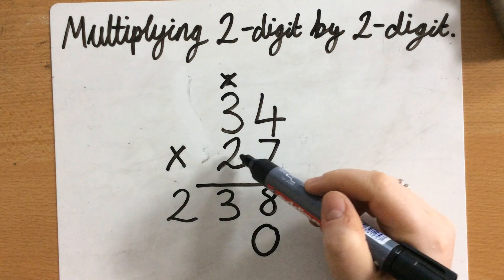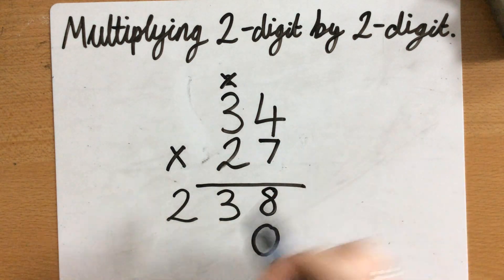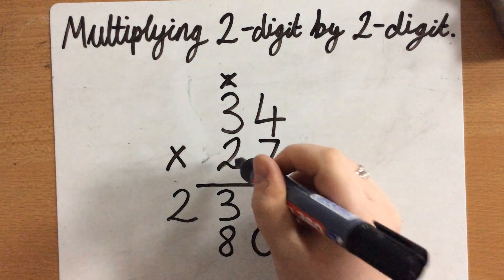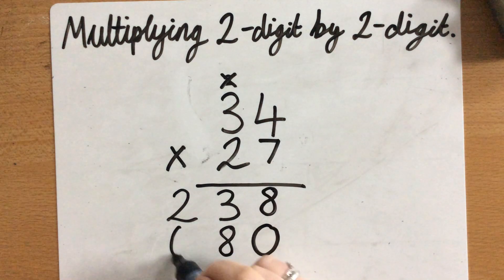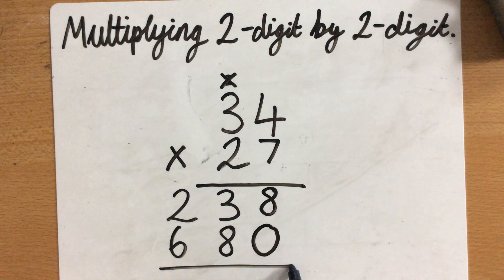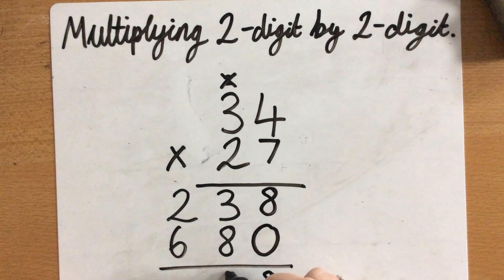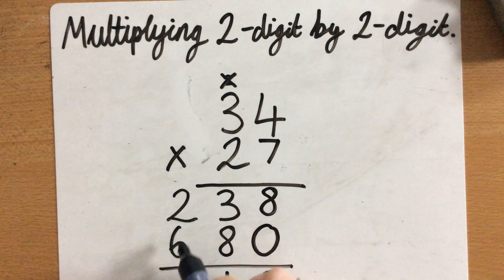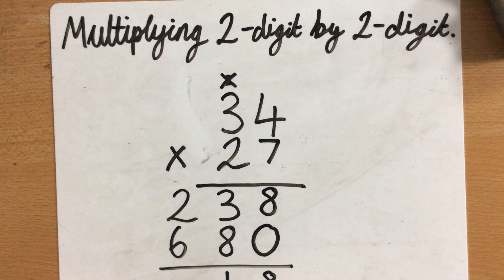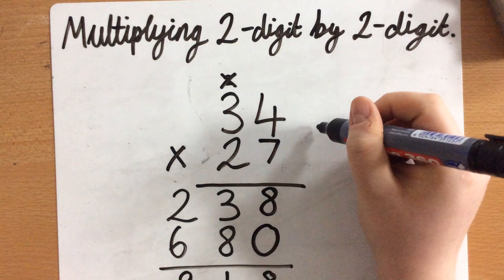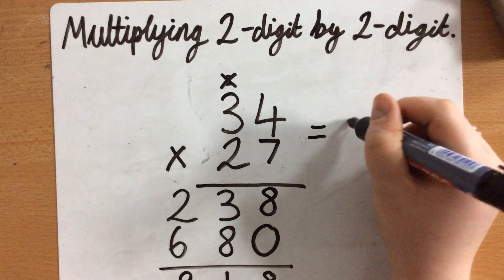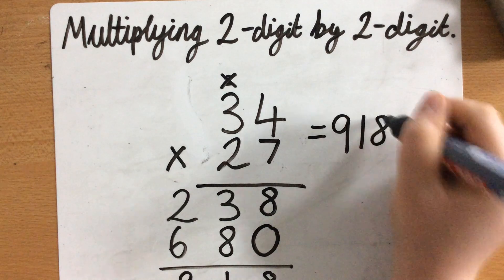Now I can just do 2 times 4, which is 8, and 2 times 3, which is 6, and then add it together. So 8 add 0 is 8, 3 add 8 is 11, 2 add 6 is 8, and the one at the bottom is 9. So your answer to 34 times 27 would be 918.